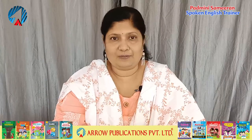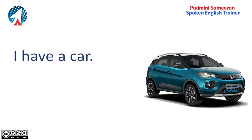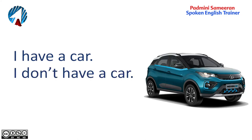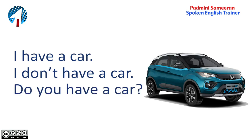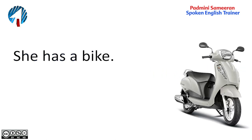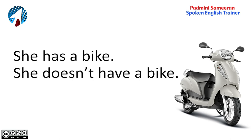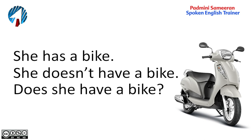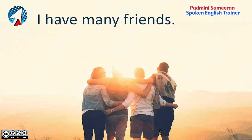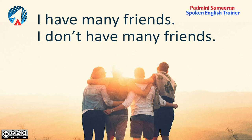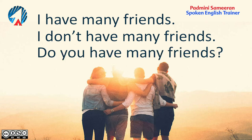We also have negative and interrogative forms. If you say 'I have a car' — that is the affirmative. The negative is 'I don't have a car', and the question is 'Do you have a car?' For 'she has a bike', the negative is 'she doesn't have a bike', and the question is 'Does she have a bike?' Another example: 'I have many friends' becomes 'I don't have many friends' and 'Do you have many friends?'